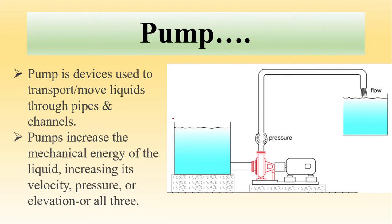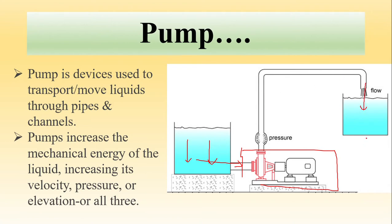For example, your municipal corporation supplies you water in the tank at the ground level, where it is stored. In a building, there is a pump which takes in water from this tank at the bottom level and supplies it to the tank at the top level, which then supplies water to all individual homes in that building. So here we can see the exact application of the pump — it takes water at the lower level and disperses it at a higher level.